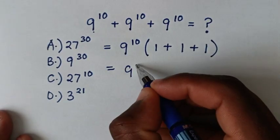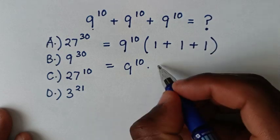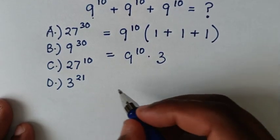It is equal to 9^10 times (1 + 1 + 1), which is 3.